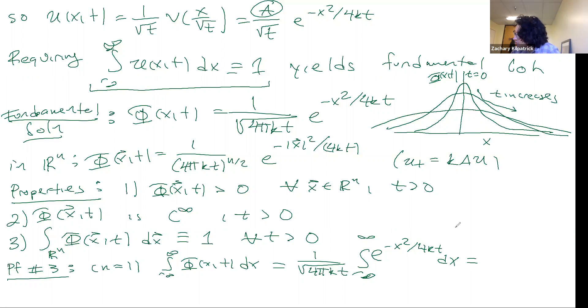We can make a change of variables. We can say Y is equal to X over the square root of 4KT, and we get 1 over the square root of pi integral from minus infinity to infinity of e to minus Y squared dy.